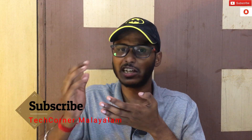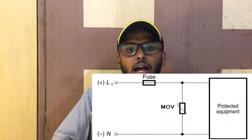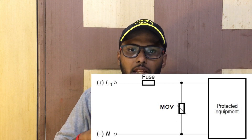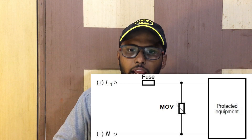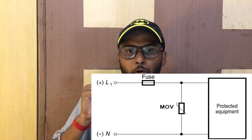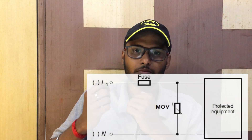In normal operating conditions, the MOV has high resistance. It is made of metal oxide with two electrodes and a ceramic content with single grains. When the voltage is at normal levels, the MOV maintains high resistance and does not interfere with the circuit. But when a high voltage surge occurs, the resistance of the MOV automatically drops to a low value.